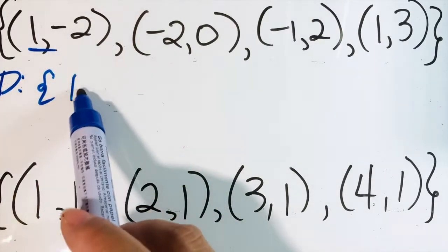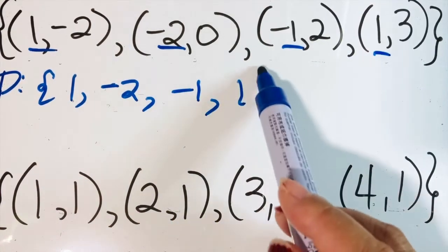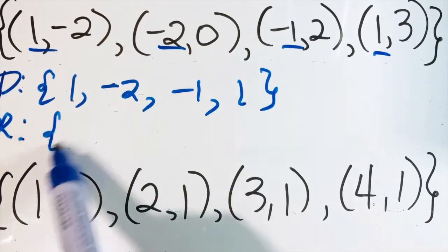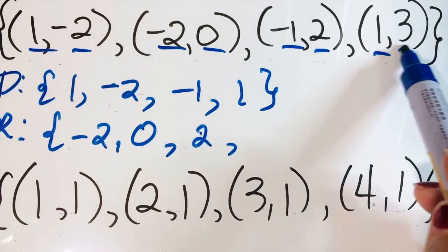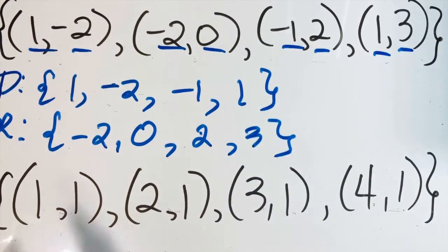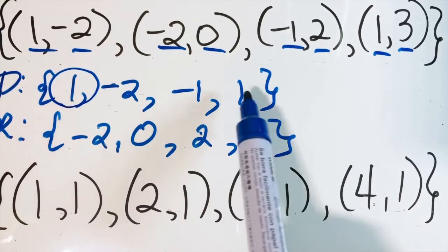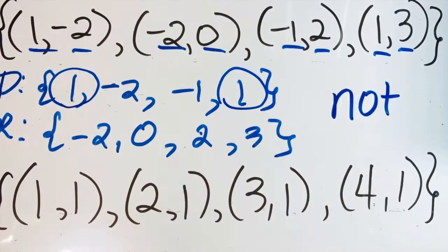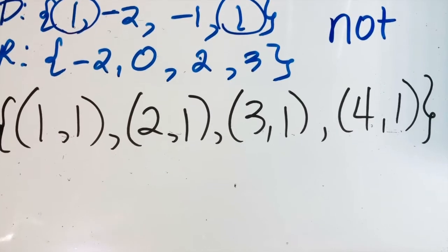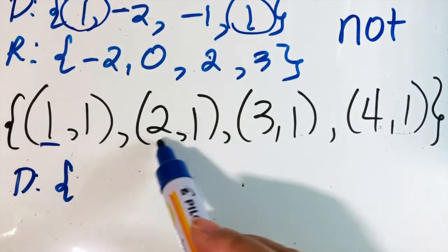The domain is: one, negative two, negative one, and one. The range is: negative two, zero, positive two, and three. Look at the domain — is there any value repeated? We have one and one. Therefore this is not a function.